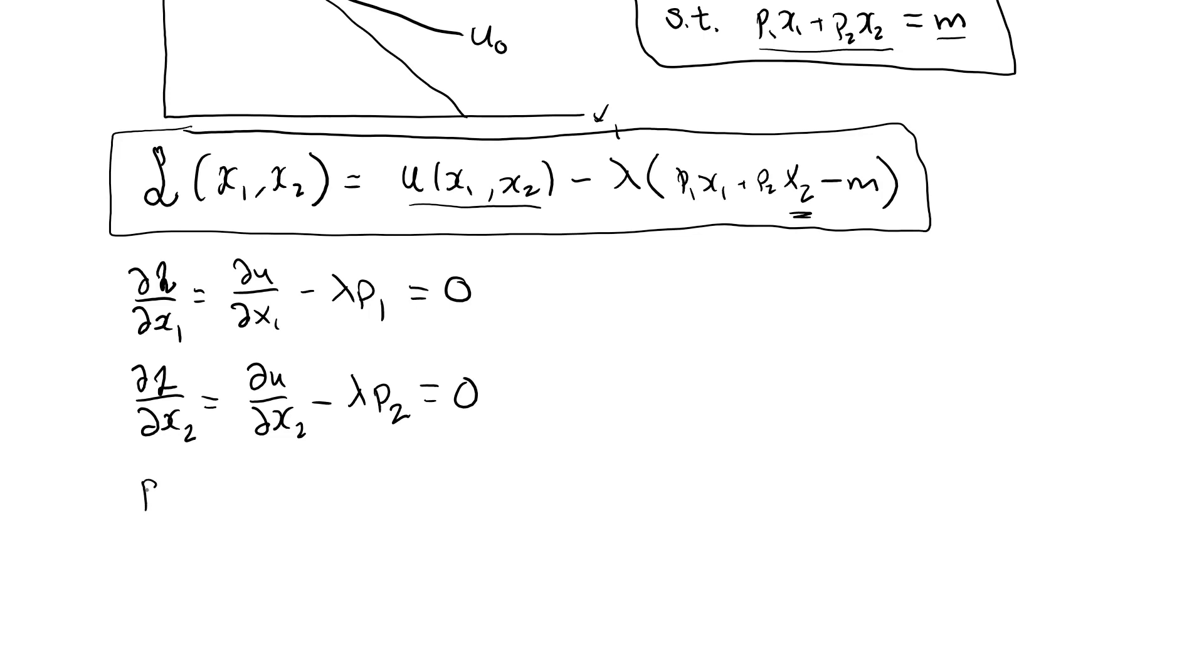The third equation is our budget line, p1 x1 plus p2 x2 equal to m, which we can also derive by setting the partial derivative of L with respect to lambda equal to zero. In any case,